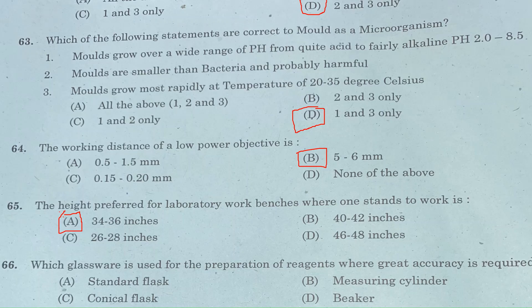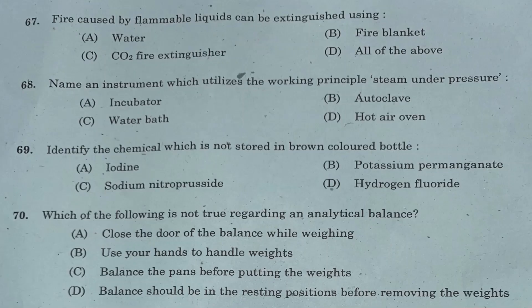Question 66: Which glassware is used for the preparation of reagents where great accuracy is required? Option A: standard flask. Option B: measuring cylinder. Option C: conical flask. Option D: beaker. Answer is Option A, standard flask.